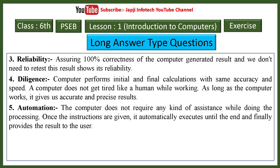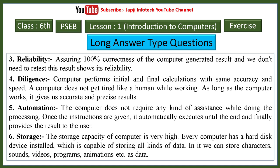Fourth characteristic is diligence — computers perform initial and final calculations with the same accuracy and speed and do not get tired like humans, giving accurate and precise results. Fifth is automation — the computer does not require assistance during processing; once instructions are given, it automatically executes until the end. Sixth is storage — the storage capacity is very high, with a hard disk capable of storing characters, sounds, videos, programs, animation, etc.